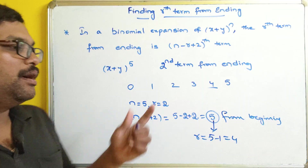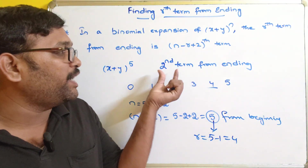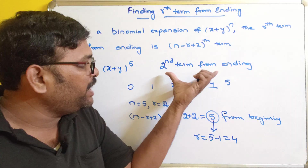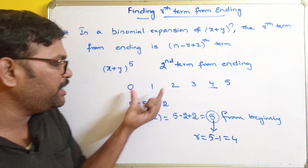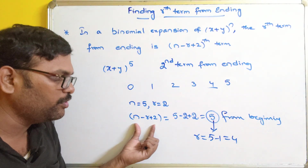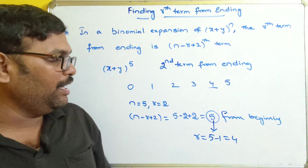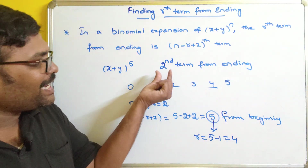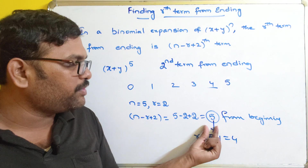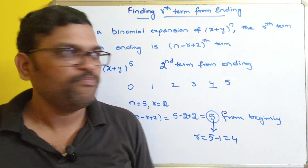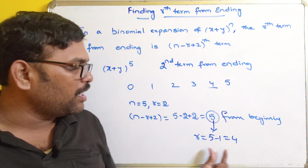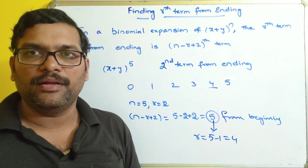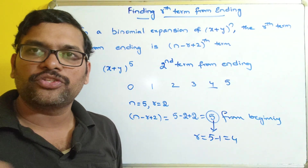This is from the beginning. We are supposed to find the second term from the ending. In order to find the second term from the ending, we apply the formula n - r + 2, and we get the term from the beginning. So the second term from ending will be the fifth term from beginning. The fifth term means r = 4 because r starts from 0. So we can directly apply the formula.